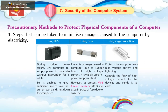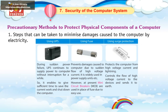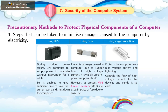Steps can be taken to minimize damage caused to the computer by electricity. Using UPS: During sudden power failure, UPS continues to supply power to the computer without interruption for a while, enabling sufficient time to save the current work and shut down the computer. Using Fuse: Prevents damages caused to the computer due to sudden flow of high voltage current. It is widely used in power supply units.